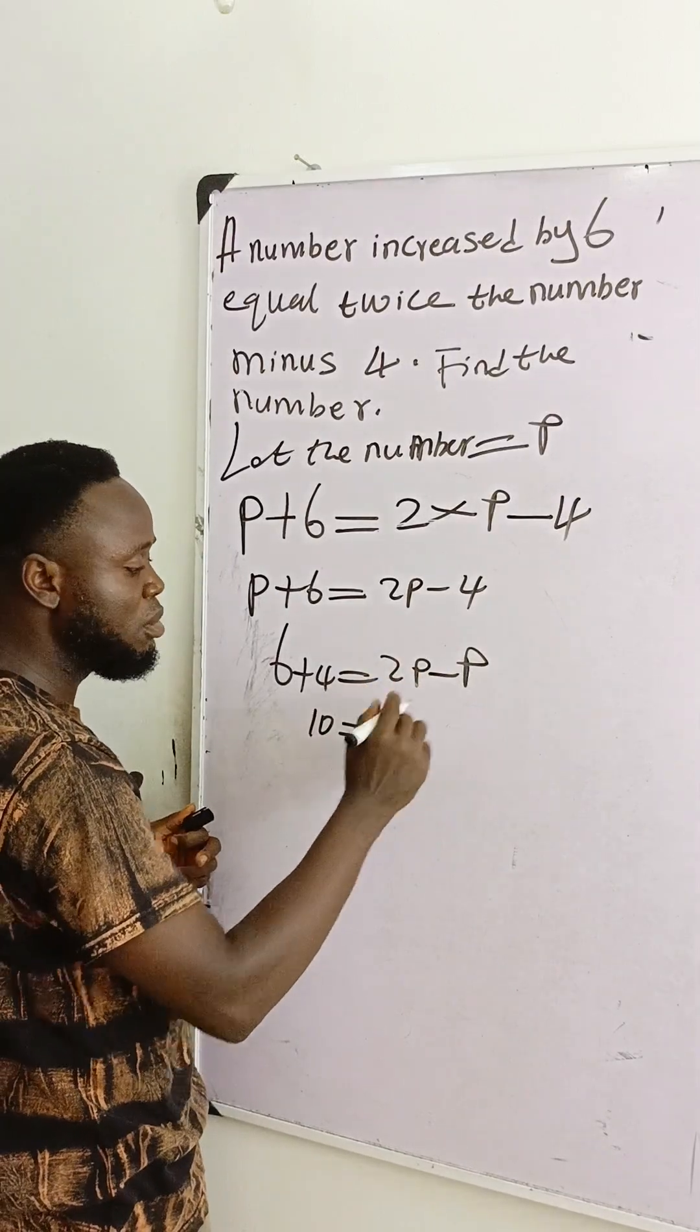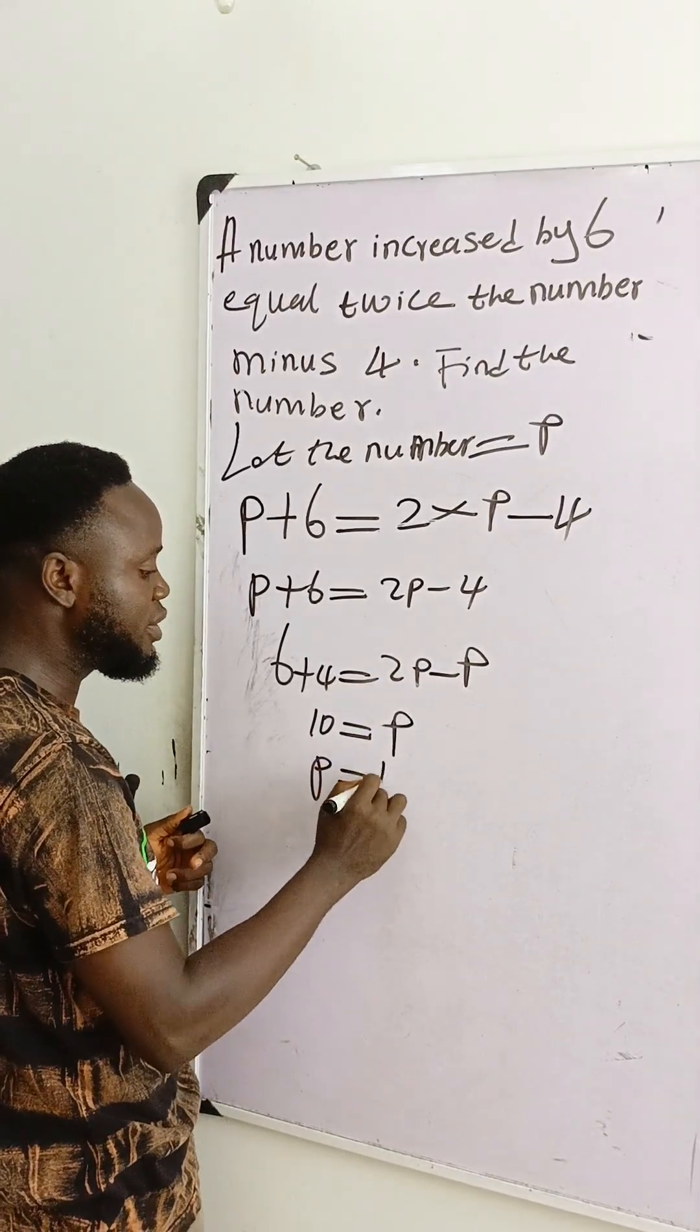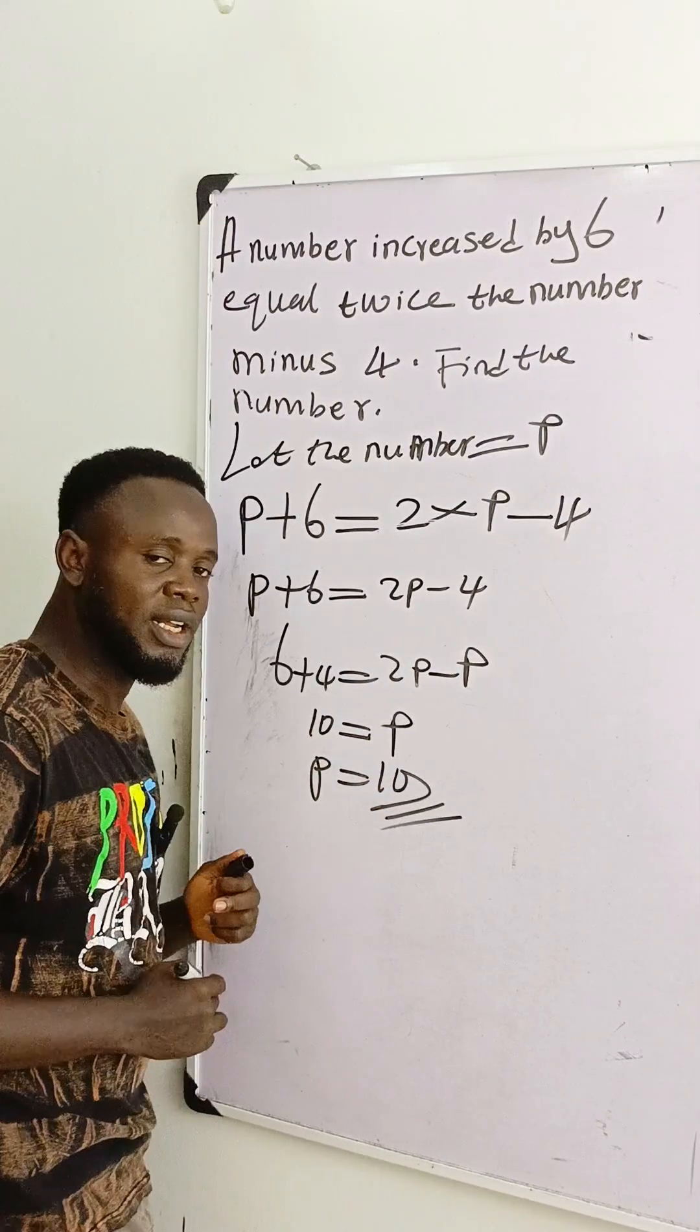P is two here, is one here. It will be remaining only P. So our P is equal to ten as the final answer. Thank you.